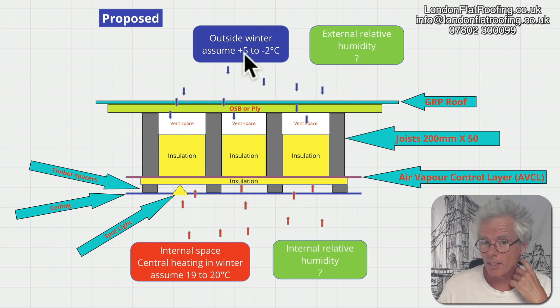Outside in the winter, plus 5 to minus 2°C. External relative humidity, well if it's been raining outside and it's plus 5, it could be wet with 85, 90, 100 percent humidity outside. The colder it gets sometimes it does get a bit drier in humidity, but you can be high humidity. You've got vented spaces here, so any high humidity outside can be blowing through those vents.